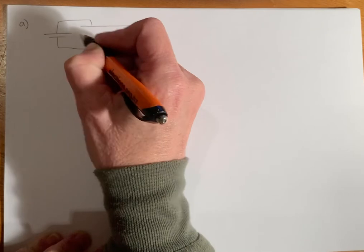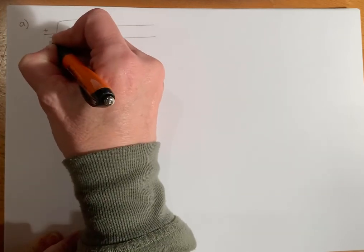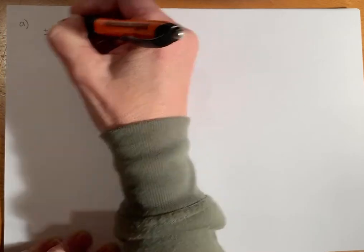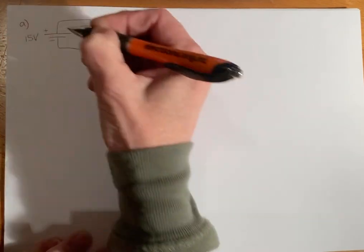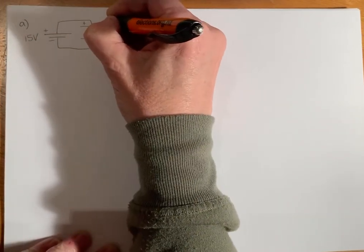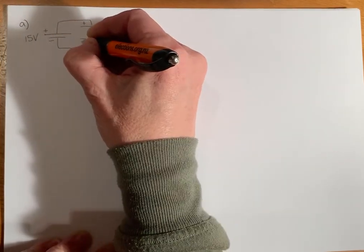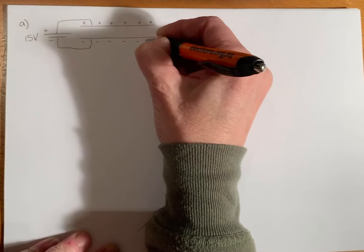I'm going to do them this way around, remembering that the long line is the positive terminal and the short line is the negative terminal of the battery. It is 15 volts, so this will make our top plate positive and our bottom plate negative.